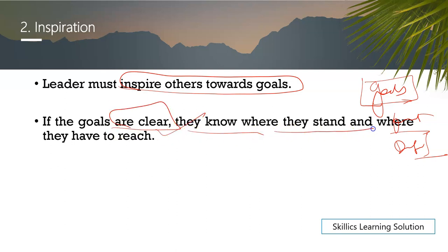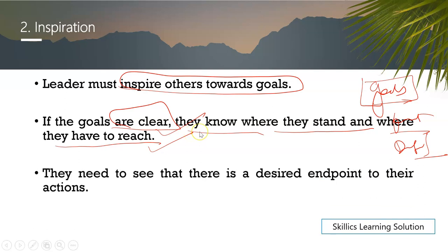If the leader has explained the goal in the right way, what will happen? They will know exactly where we are standing as a follower and where we are going. These two things they will know. The third thing is that they need to see that there is a desired end point to their action. Any follower or team members should know what is the end point. That is the role of the leader.